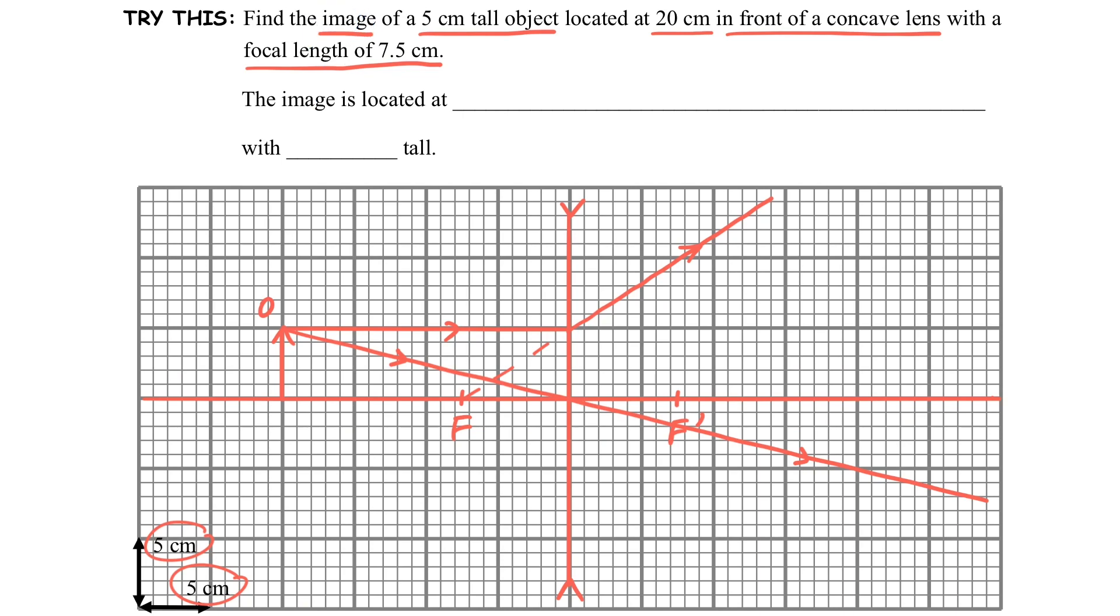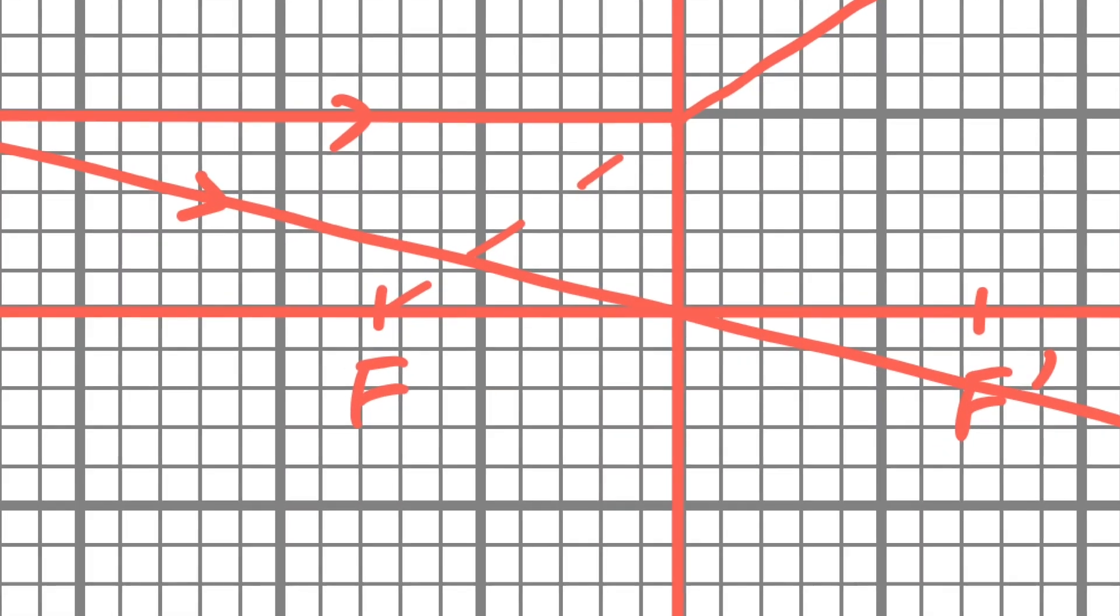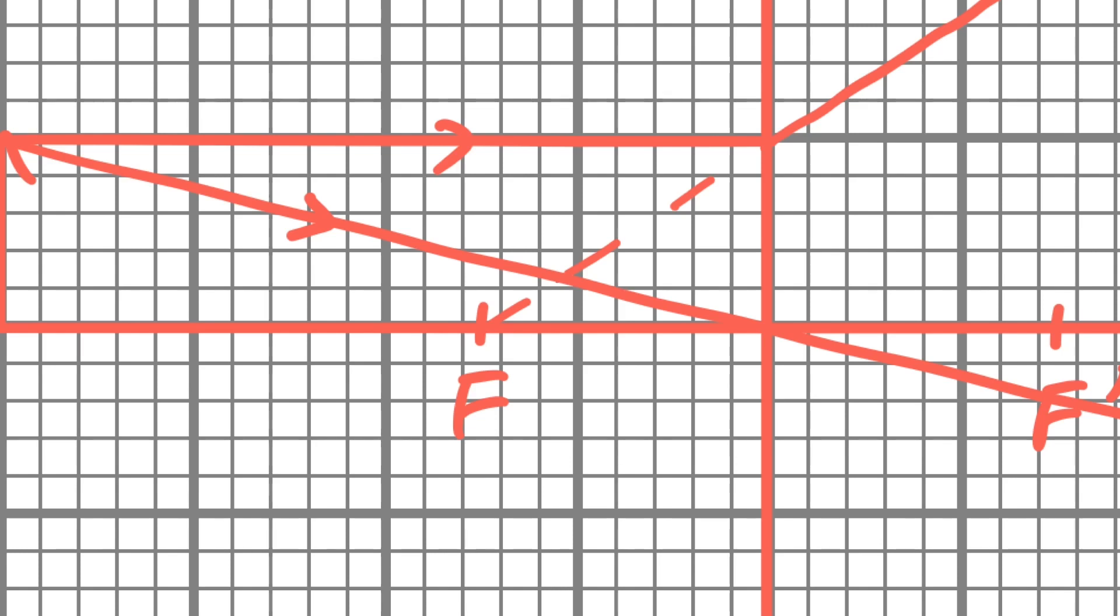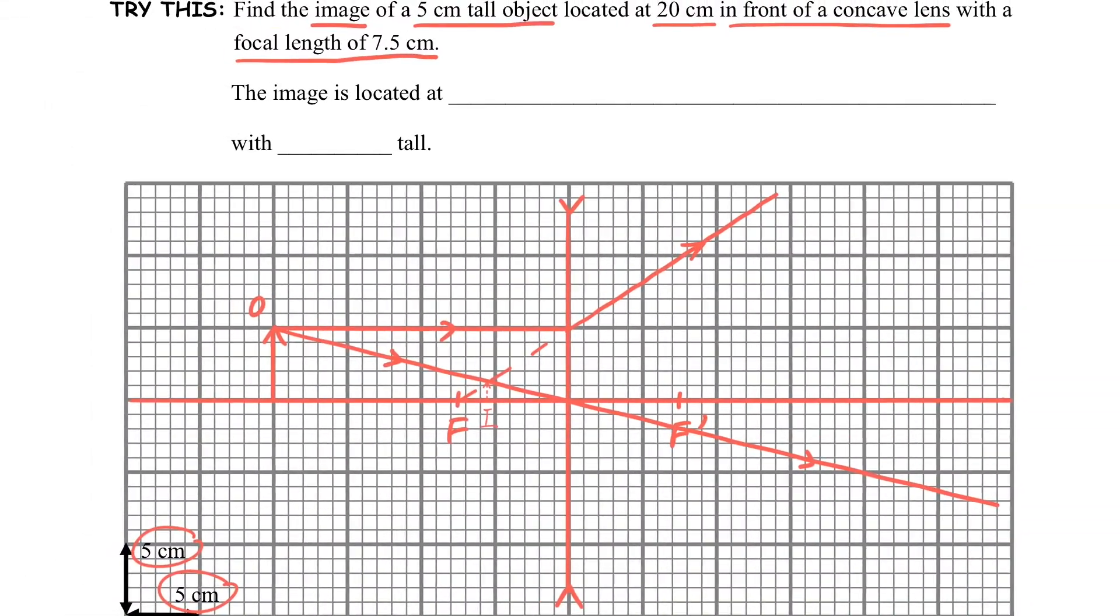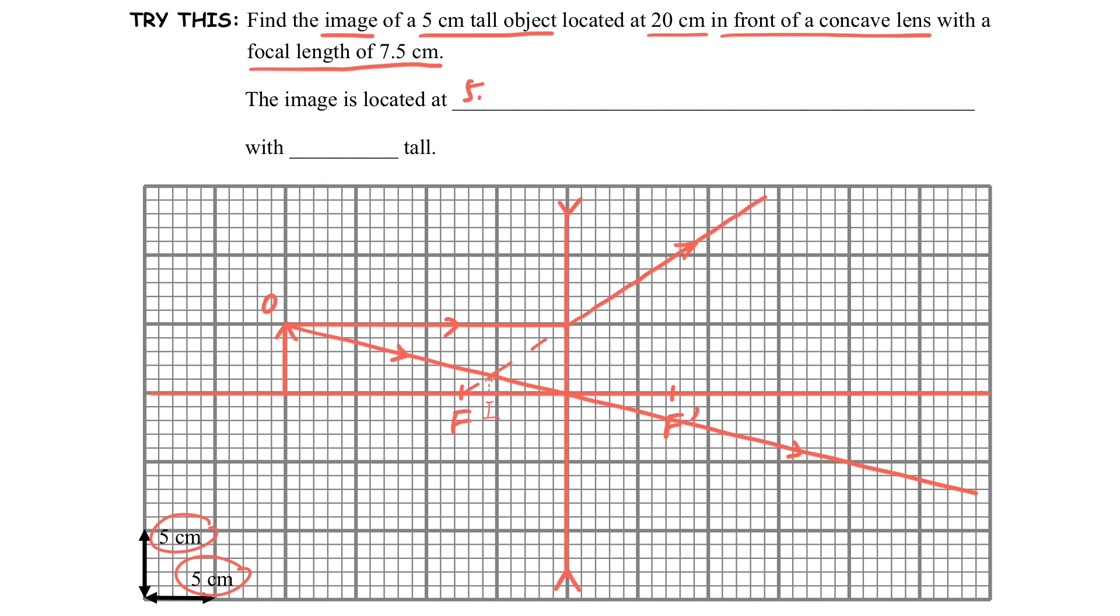So now we can find the image. Where is the image? Image is the intersection point of the reflected ray. So here you can see the intersection point of these two lines is here, which is the image. So we have located the image.